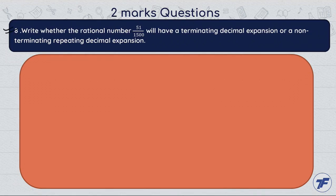Now the next question, question number 8. Write whether the rational number 51 upon 1500 will have a terminating decimal expansion or a non-terminating repeating decimal expansion.